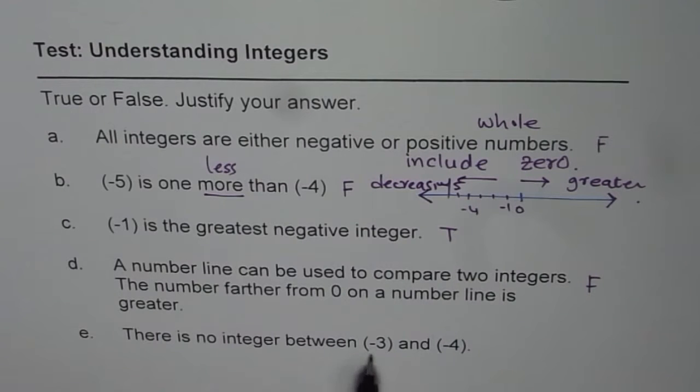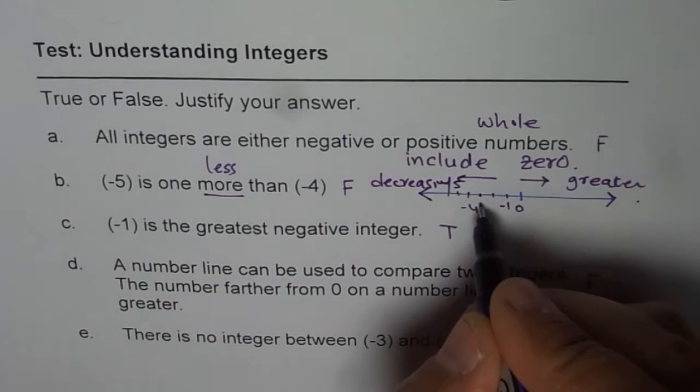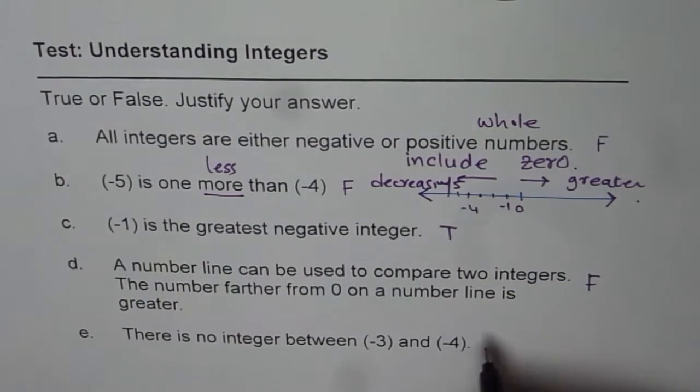Question E: There is no integer between minus 3 and minus 4. Between minus 3 and minus 4, we indeed have no integers. So, this statement is true.